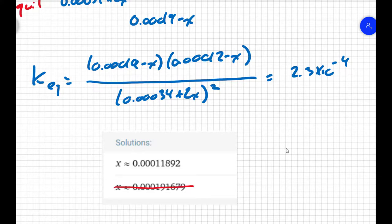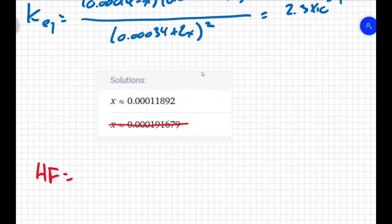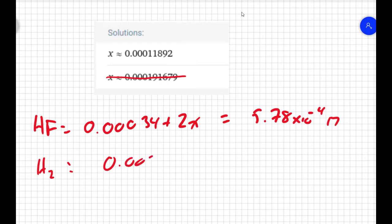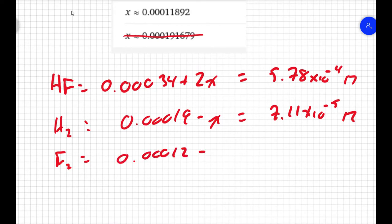So the question was asking, what is the equilibrium concentrations? Well, we said that the HF is going to equal 0.00034 plus 2X. So that means that I get a concentration of HF of 5.78 times 10 to the negative 4 molar. We said the H2 is going to be 0.00019 minus X. So that's going to be 7.11 times 10 to the negative 5 molar. And we said that the F2 was going to equal 0.00012 minus X. Well, our X is basically 0.00012, so this is going to be pretty much 0. I get 1.08 times 10 to the negative 6 molar. Now, this makes sense, because our K value is much smaller than 1, so our equilibrium should be favored to the left.